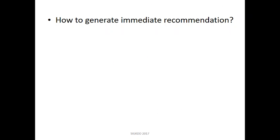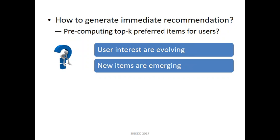However, given a large number of users and items, it is challenging to generate immediate recommendation. But real-time recommendation results better satisfy the requirement from users. Is it possible to pre-compute top-key preferred items for users? This is questionable, since user interest is evolving and new items are always emerging.